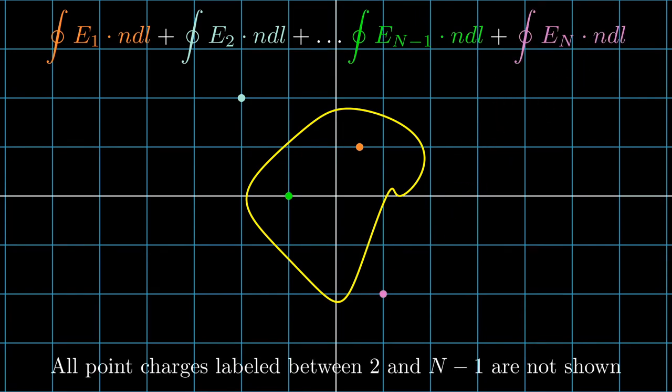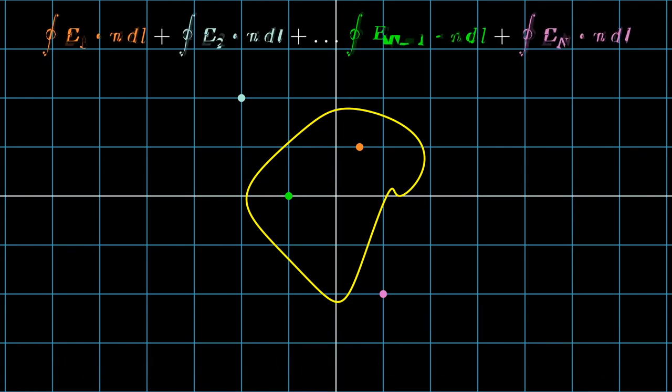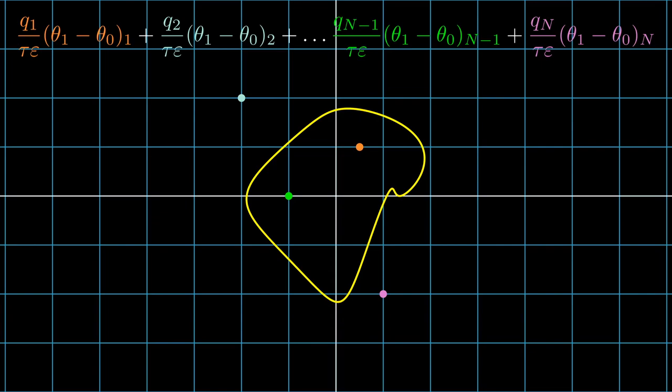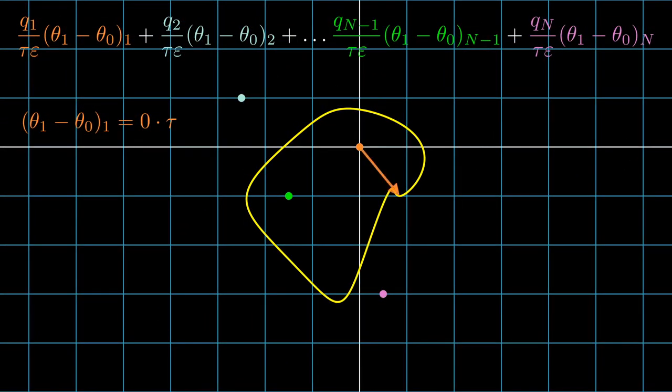Note that in this visualization, I'll make all of the point charges labeled between 2 and n-1 outside of the closed line and not shown on the screen to keep the visualization clean. Next, I'll rewrite the integrals as the angle differences times their constants, but the angles can't be from the origin since not all of the point charges are on the origin. I can fix this by calculating each angle difference on its own, treating its corresponding point charge as the origin.